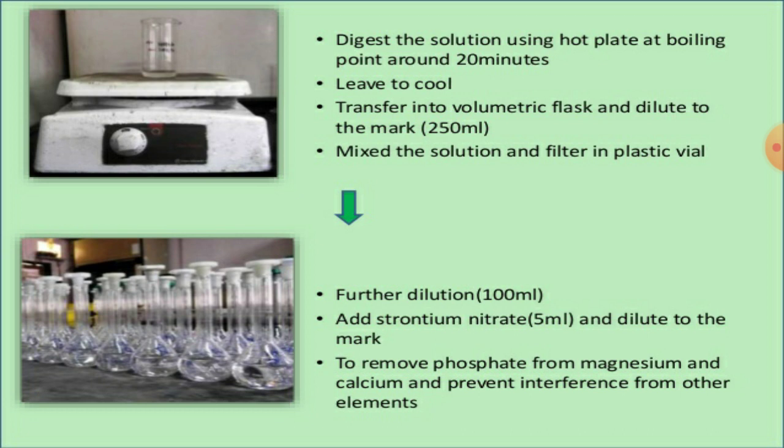After cooling, transfer the solution into a volumetric flask and dilute up to the 250 ml mark. Mix the solution and filter into a plastic container. For further dilution to about 100 ml, add 5 ml of strontium nitrate to remove phosphate from magnesium and calcium and to prevent interference from other elements.